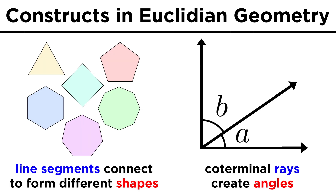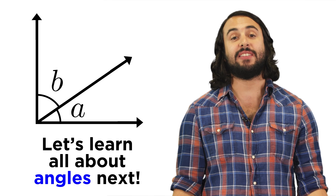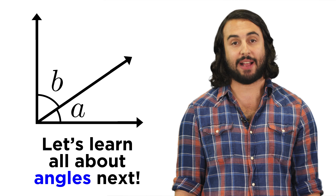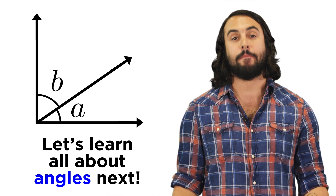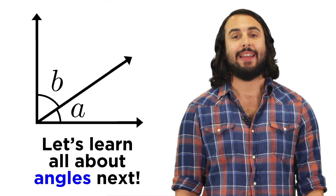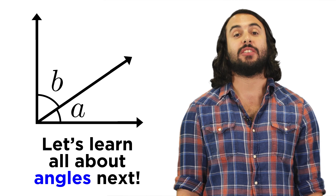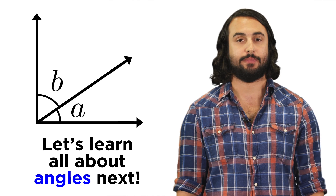We can make shapes with differing numbers of sides, and we can also create all kinds of angles between these lines. There is plenty to discuss regarding the types of angles that are possible, their magnitudes, and their relationships, so let's move on and talk about angles.